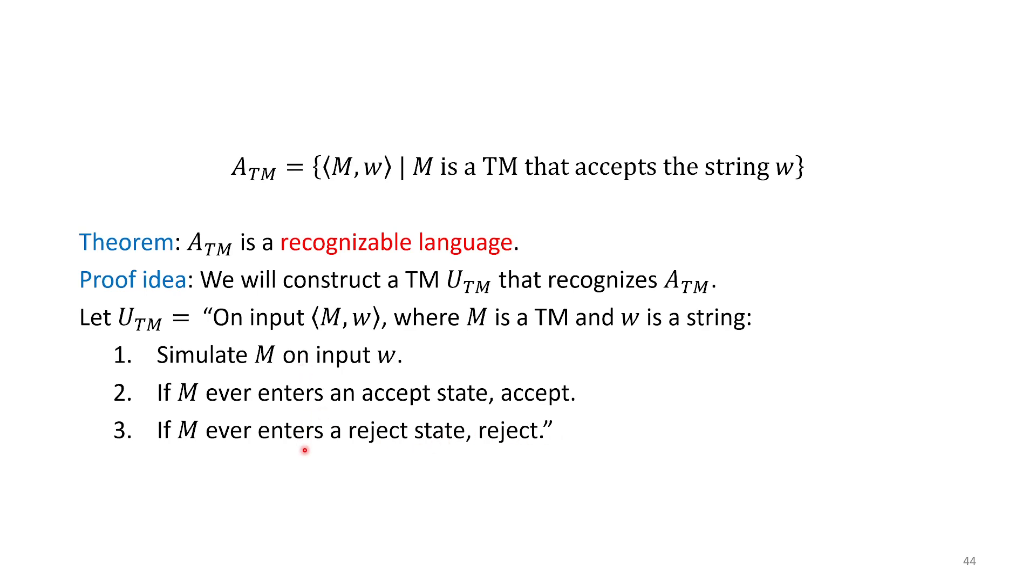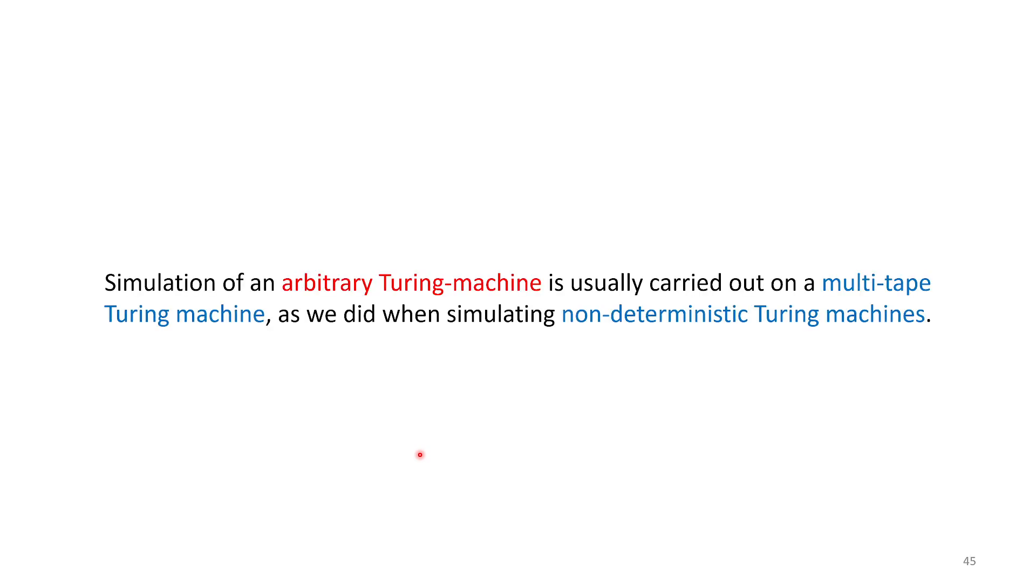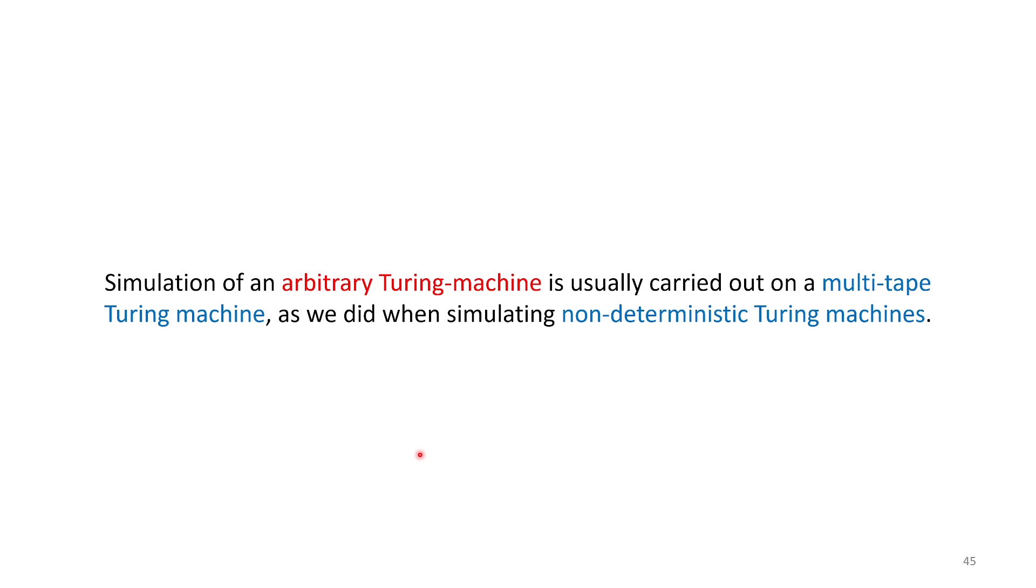What's implicit but not explicit is if M never accepts or never rejects—meaning it runs forever—we run forever too. That's implicit and very important. Simulating this Turing machine, we'll use a multi-tape Turing machine similar to previous proofs. I'm going to assume we all accept this is something we can do. I call this UTM to highlight it can simulate any Turing machine.